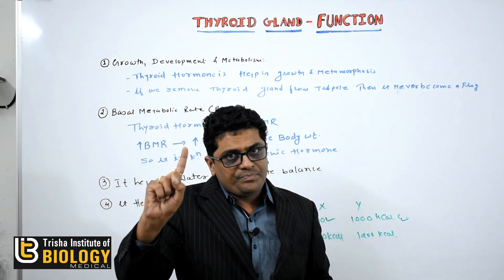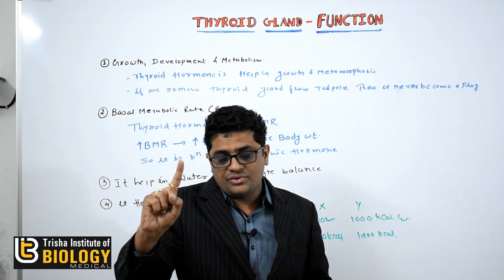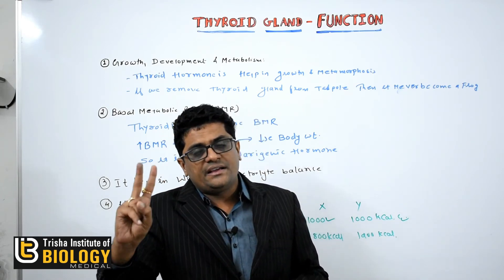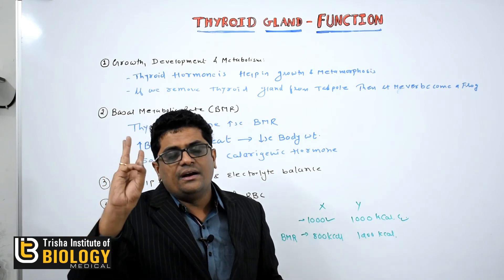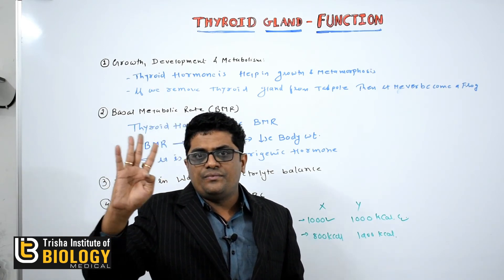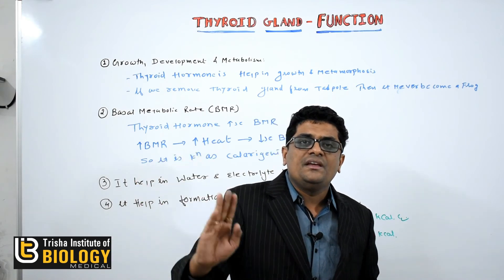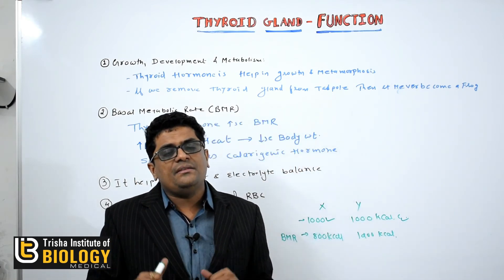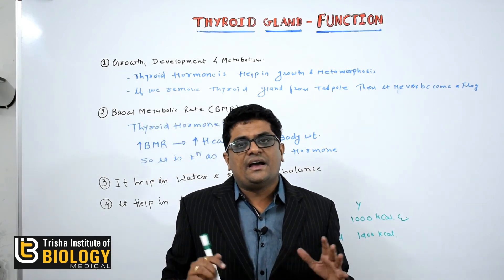First, development, growth and metamorphism. Second, increase the basal metabolic rate. Third, electrolyte and water balance. And fourth, it helps in the increase of RBC production. So these are the main functions of the thyroid gland.